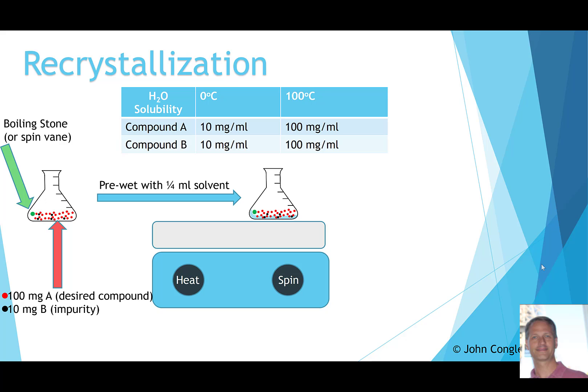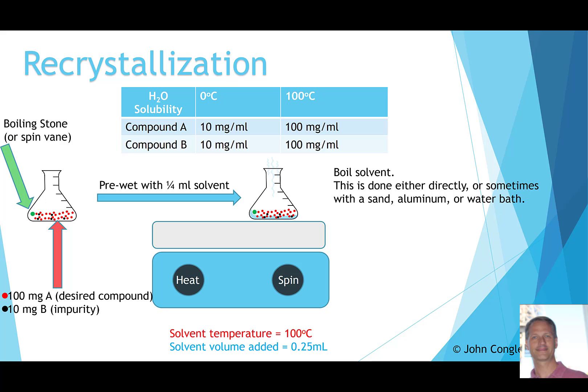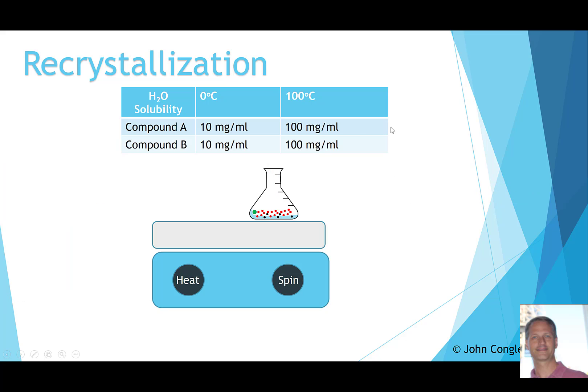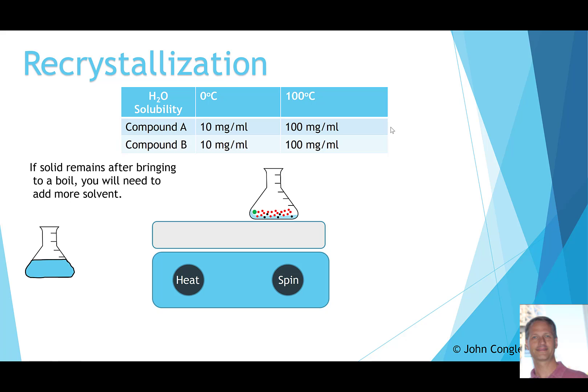We place it on the hot plate and bring the solvent to a boil — either directly on the hot plate or using a sand, aluminum, or water bath. At 100 degrees Celsius with 0.25 milliliters of solvent, we need to add up to 1 milliliter total to dissolve the 100 milligrams, since the solubility at boiling is 100 milligrams per milliliter. If solid remains after bringing it to a boil, we need to add more solvent.